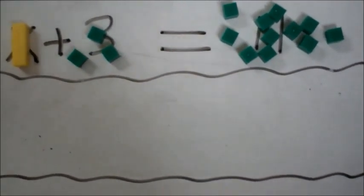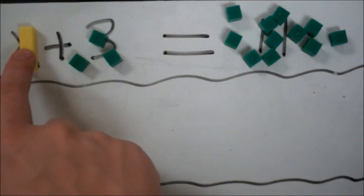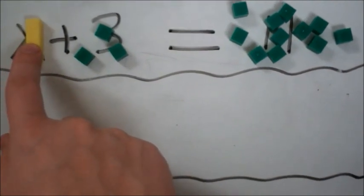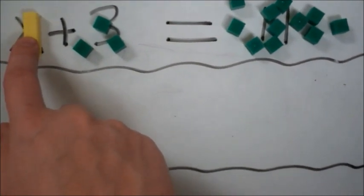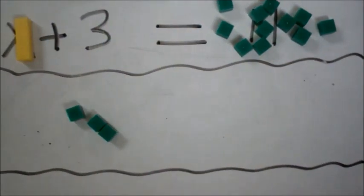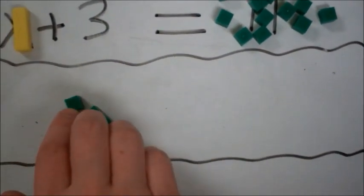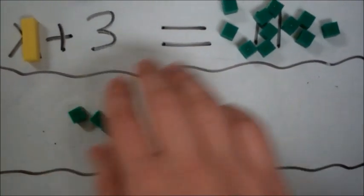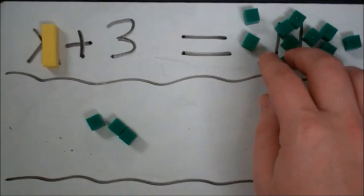We need to isolate the variable. The variable is over here on the left side. Isolate means I want to get it all by itself. How do I get this all by itself? I have to remove these three. If I remove three from the left side of the equation, we get to remove three from the right side of the equation.